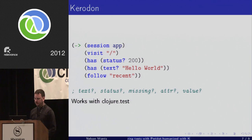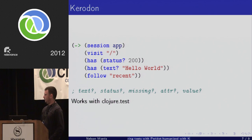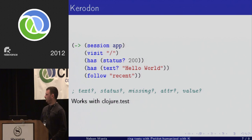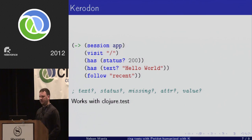I like to be able to do some interaction with the website and then test that I'm getting what I expect, then continue on. Kerodon has a small selection of test helpers. You wrap them in the `has` function — in this case, checking that when we go to the root page we get a 200 response status, and that the page text actually contains 'hello world'. It uses Enlive to parse the HTML and check the body text.